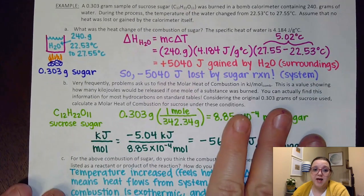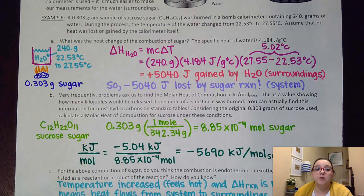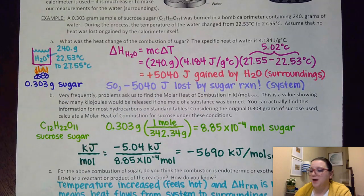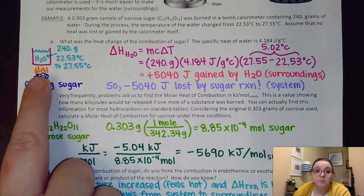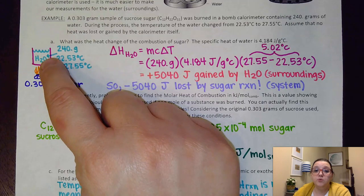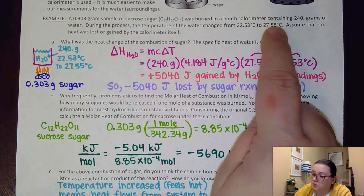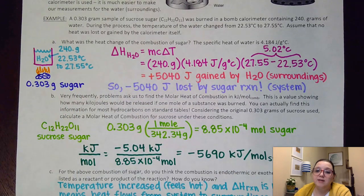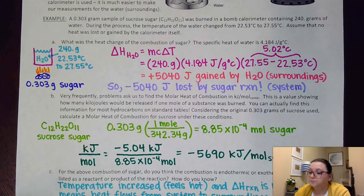So, let's see an example of this in action here. It gives us, on this example, that we have a 0.303 gram sample of sucrose sugar burned in a bomb calorimeter containing 240 grams of water. And what I did is I drew myself a little picture here. Now, I didn't draw a bomb calorimeter. I drew a simplified one. But it still gets the point across. Here's my sample of sugar that is burning. And I'm going to have my water suspended. And what I'm going to assume is that all of the heat from this burning is going to that water. It also tells me that during the process, the temperature of the water changed from 22.53 to 27.55 degrees Celsius. So, I went ahead and wrote that data over here. It also says that assume that no heat was lost or gained by the calorimeter itself, which is a pretty good assumption on a bomb calorimeter situation.